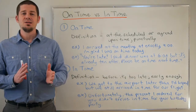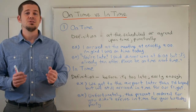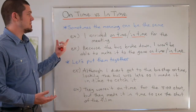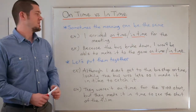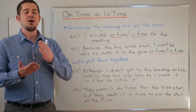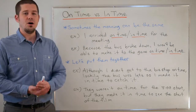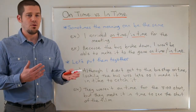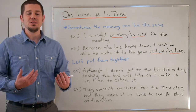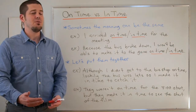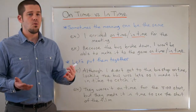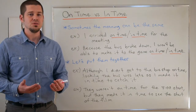If the difference between 'on time' and 'in time' is still not clear, let's look at situations where they can both be used the same way — sometimes the meaning can be the same. For example: 'I arrived on time or in time for the meeting.' The meeting starts at 10 o'clock. If I arrived on time, I arrived at 10 o'clock or before. If I arrived in time, I arrived before the meeting began. Maybe the meeting started a little late, so in that case we can use them interchangeably — it's not going to make a difference.